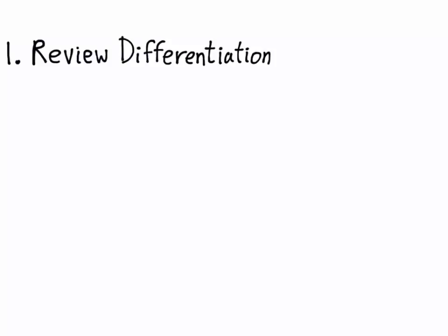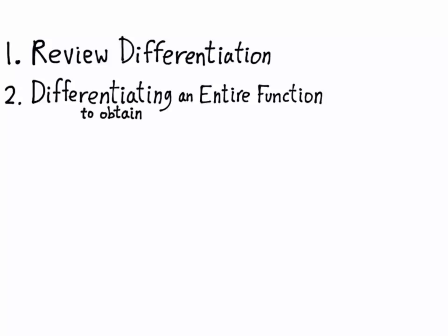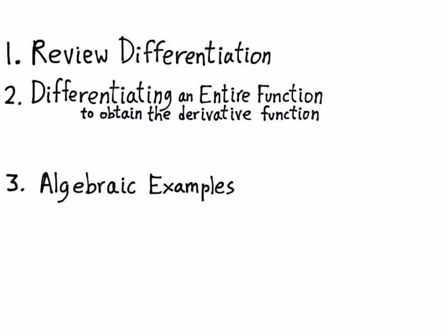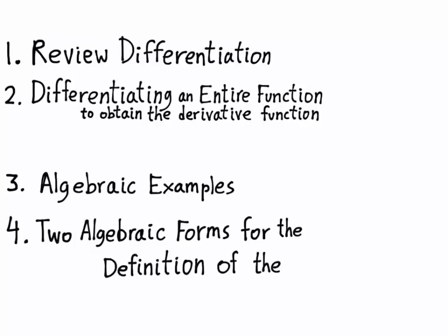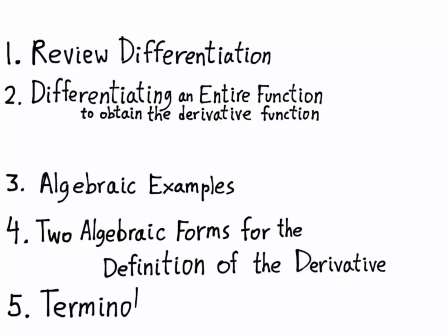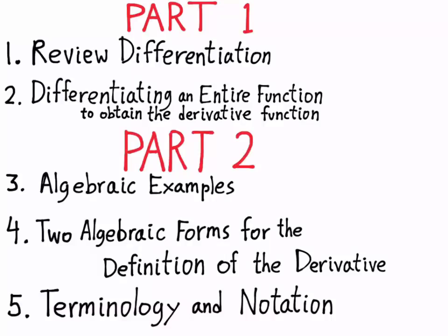To give you a broad overview: first we're going to review the concept of differentiation, because in order to compute a derivative you need to differentiate. There is an earlier video you should watch on differentiation — if you didn't see that video, go back and watch it before this one. After we review differentiation, we're going to differentiate an entire function, because that's how we obtain the derivative function — by differentiating not a single point but an entire function. Third, we'll look at some algebraic examples. Fourth, we'll show the two common algebraic forms for the definition of the derivative. And finally, we'll talk about terminology and notation. This is a bit much for one video, so I'm dividing it into two parts, and this video will just be part one.